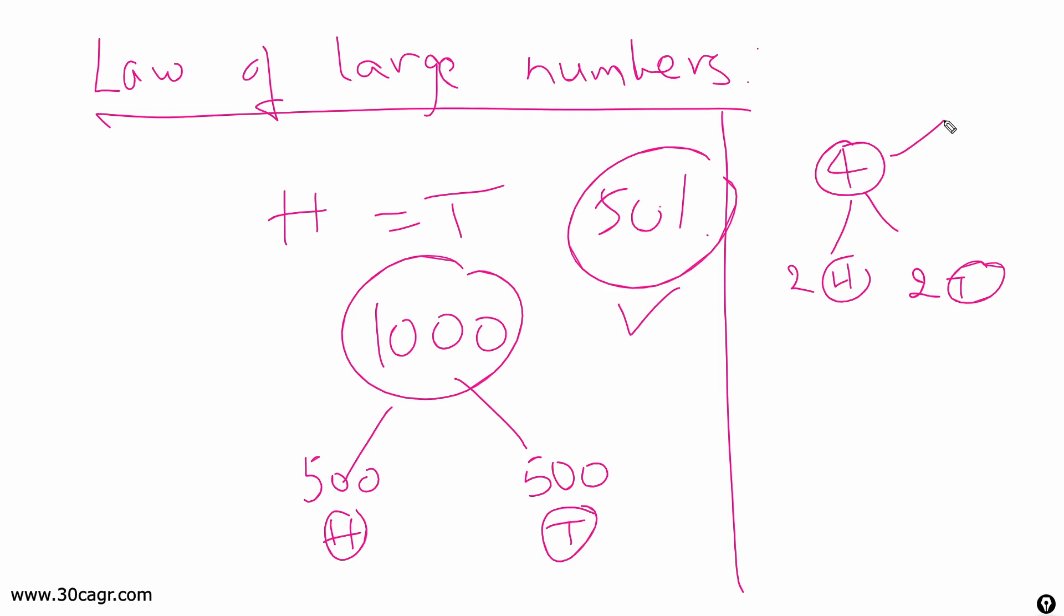Now take a coin and start flipping the coin. If you flip the coin for let us say four times, is there a guarantee that this 50 percent will be honored and you get exactly two heads and then two tails? No, right? There is no guarantee. You might get three heads or you might get four heads also.